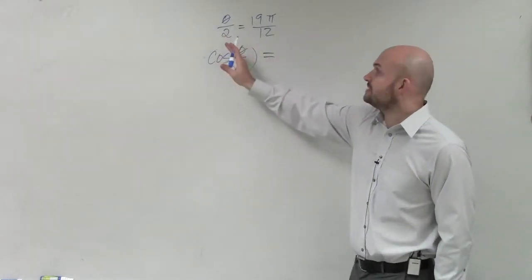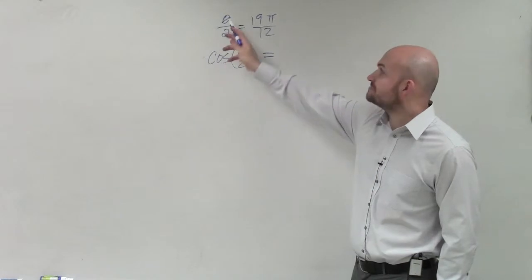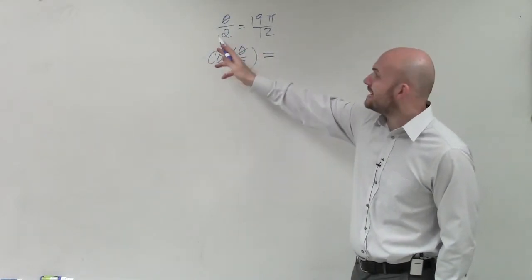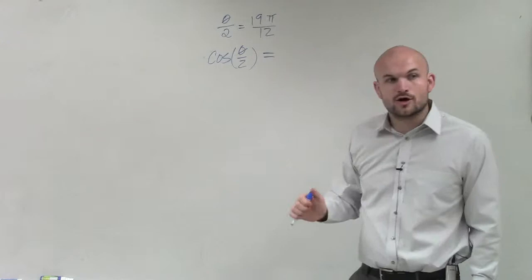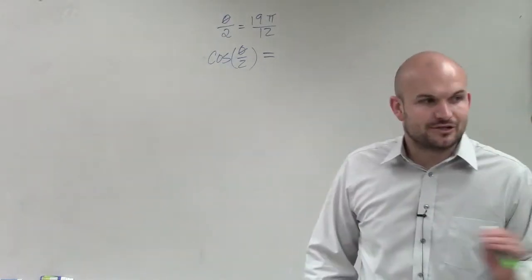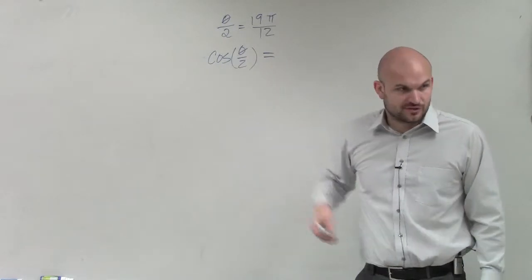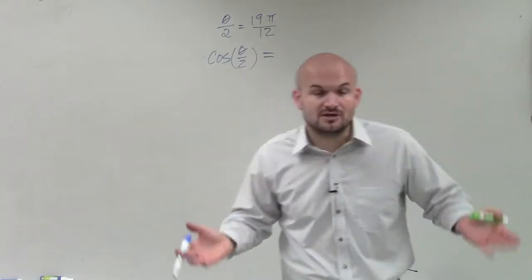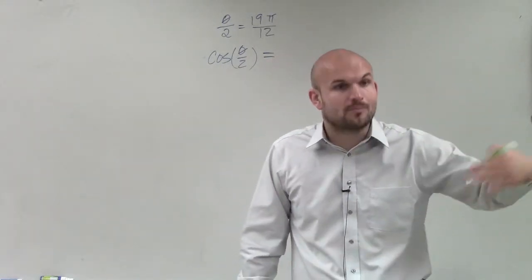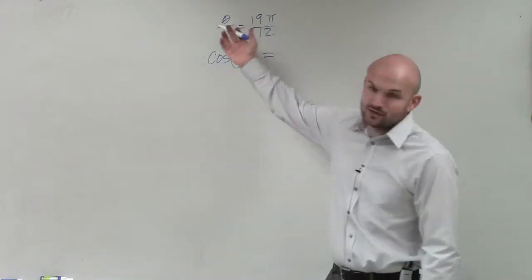In this case, I am giving you an angle that is being divided by 2. That angle, theta divided by 2, is 19π over 12. What I'm asking you to do is evaluate for cosine of θ/2. So I might give you an angle and say, evaluate this for θ/2, where this angle is in this case.